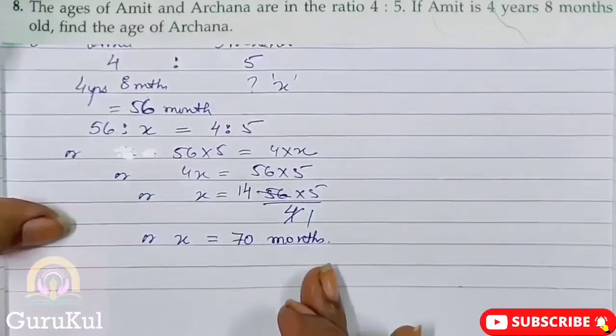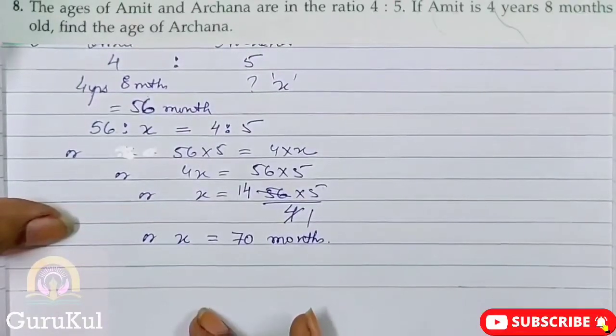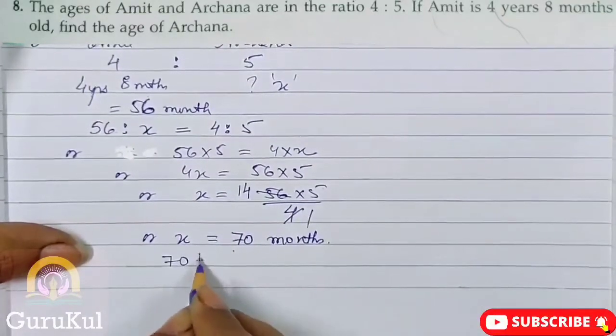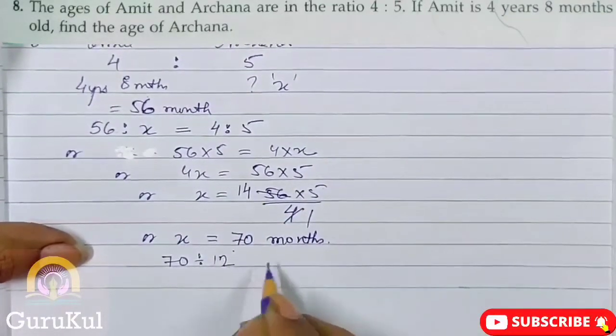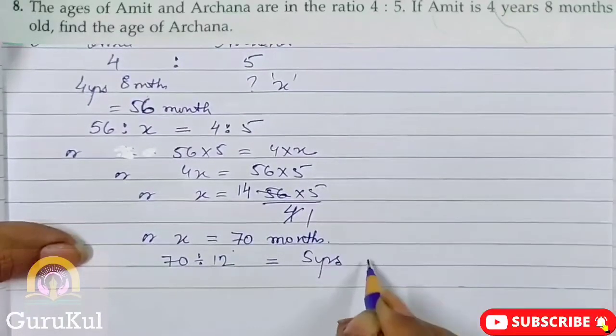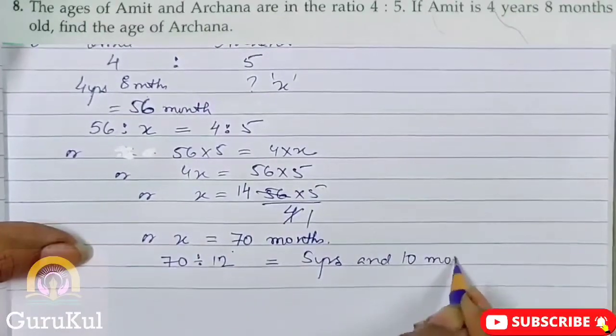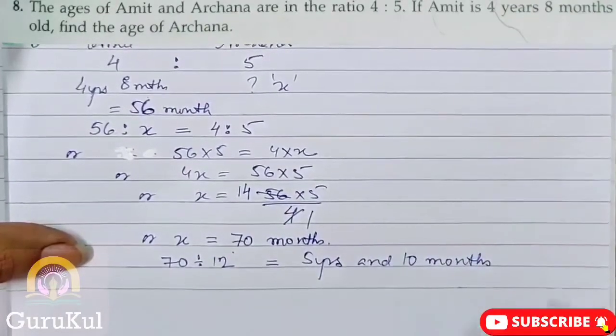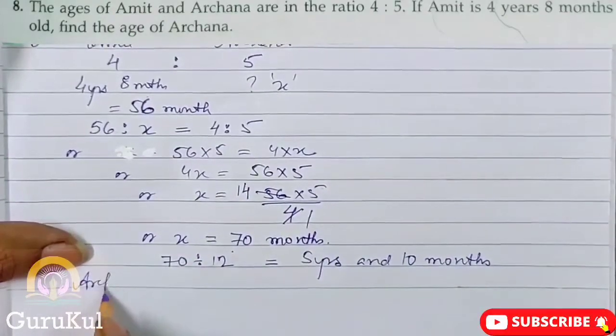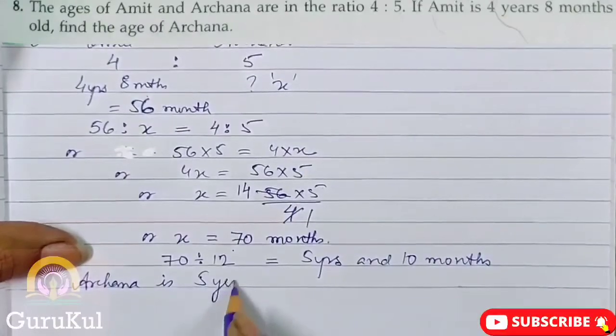Now this is in months. Now we will convert this back into years and months. So for that what will we do? 70 will be divided by 12, which will give us the answer 5 years and 10 months. So X, which is Archana's age, is 5 years 10 months.